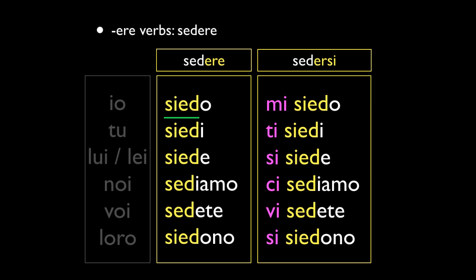The difference between sedere and sedersi is small but important. Sedere means 'to sit' or 'be sitting' in general. Sedersi is 'to sit down.' So mi siedo means 'I sit down.' They're obviously very similar verbs in meaning.